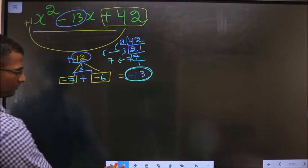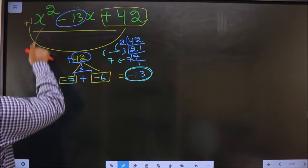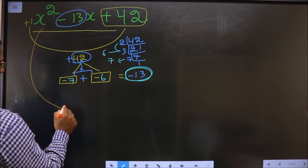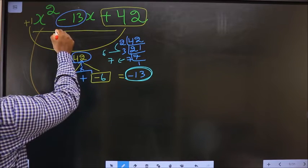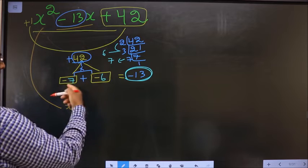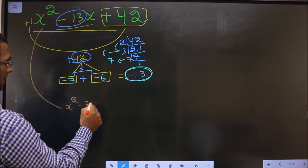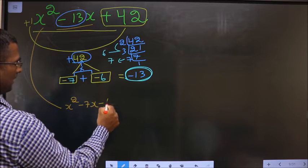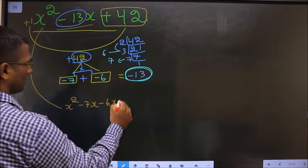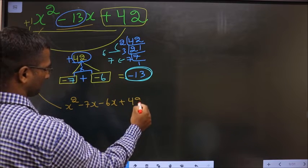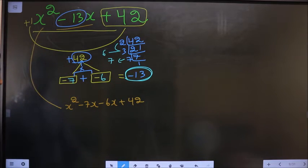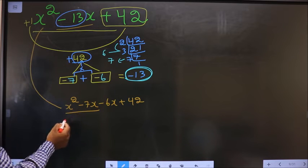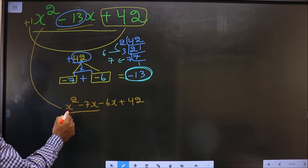Now this will change to x². In place of -13x, now I will be writing -7x - 6x + 42. Okay? Now what can I take common from these two? x from x².